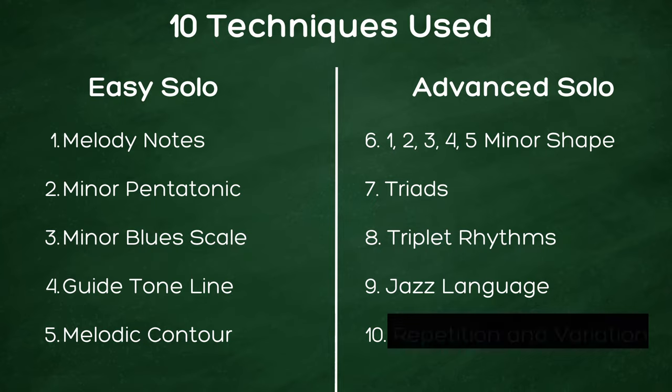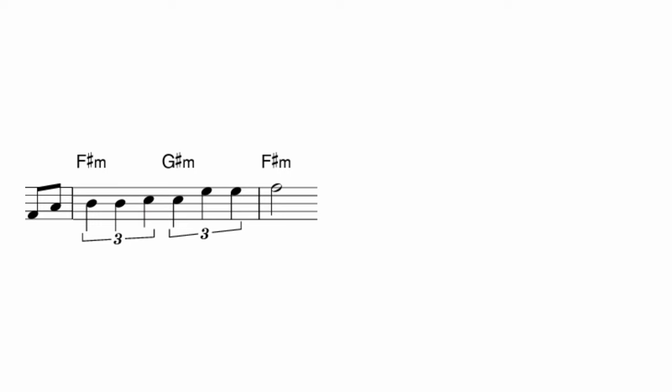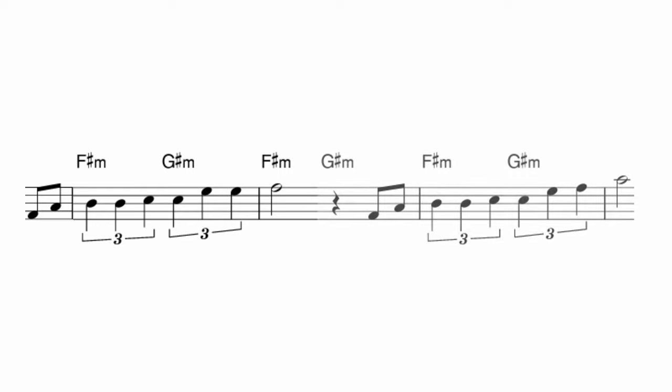For the final technique, it's a really straightforward one: repetition with variation. Essentially what you do is play a two-measure phrase, then repeat that two-measure phrase but change something small about it.